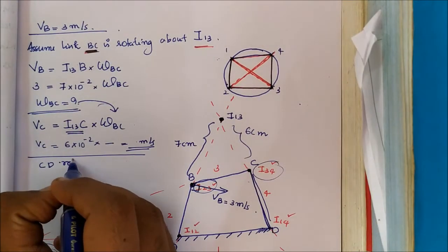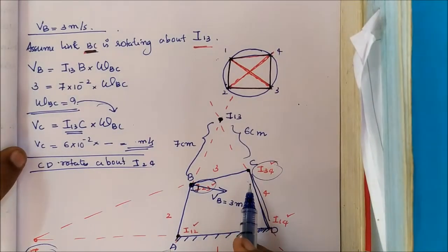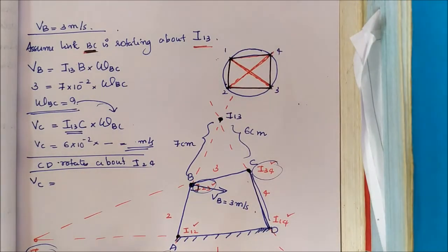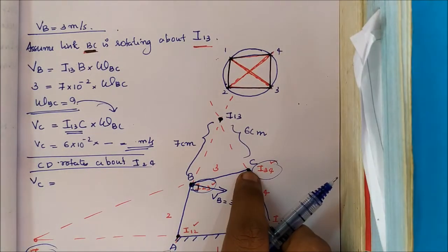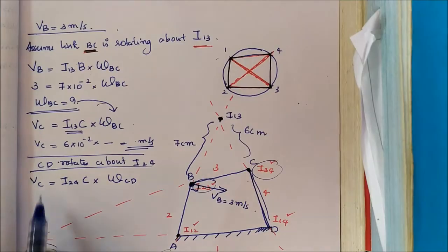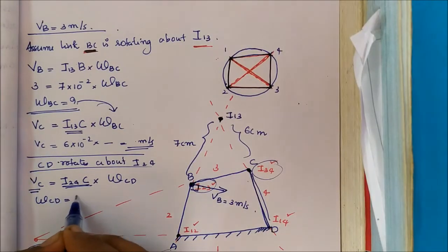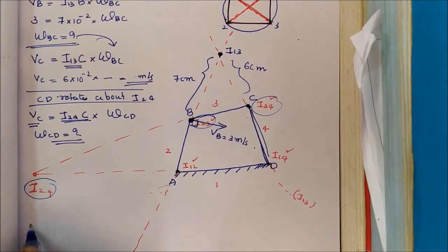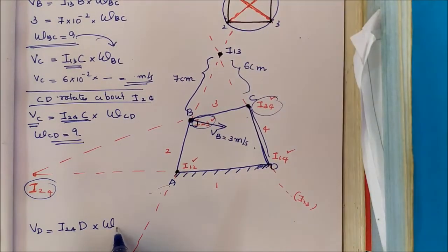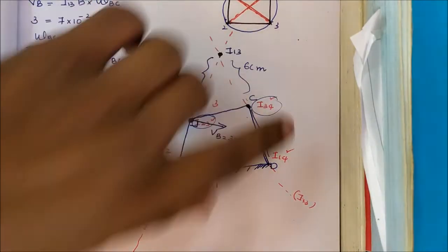Link CD rotates about instantaneous center I24. We already have the velocity of C. VC equals I24C times omega CD. From this, we find VD equals I24D times omega CD.